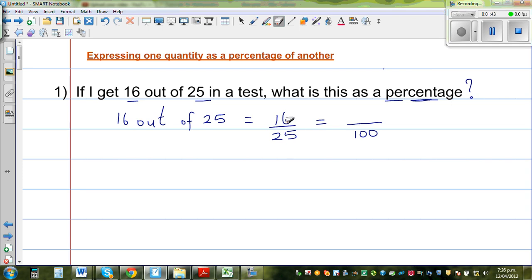OK, so I want to write 16 out of 25 is equal to something out of 100. So if you know the times table, I'm thinking like this: 25 becomes 100. So I'm thinking like this: 25 times what gives me 100? So 25 times 4 is 100. So you do the same thing to the top number. So I do times this by 4. So 16 times 4, I hope you know is 64.